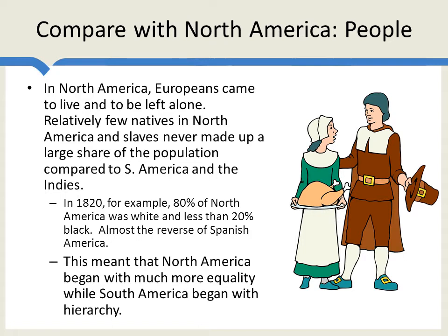Moreover, the fact that there were relatively few natives in North America, and there were no silver mines and no sugar production, meant that the people who came to North America were not the aristocrats of the day. They wanted to come here to live, not to rule, and to be left alone. They were the weirdos of the day, the religious nuts — people trying to get away from everything which had oppressed them in Europe. These were the people who came to America, rather than the gung-ho type looking to make a buck who went to Central and South America.